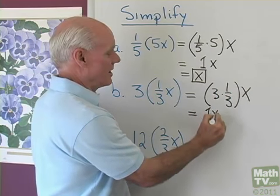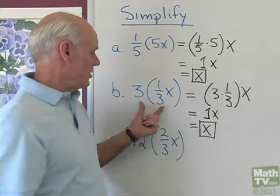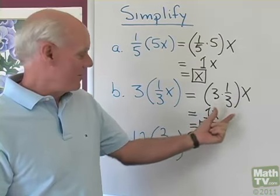That's going to be 1 times x, which again is just x. So the reason why 3 times 1/3x is x is because of the associative property.